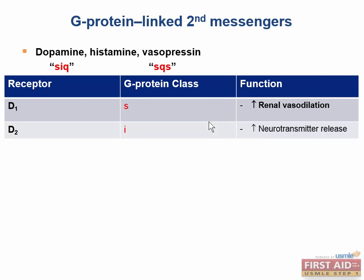The D2 receptor is of the G-sub-I class, and it modulates neurotransmitter release in the brain. In neurology, dopamine plays a major role in the pathophysiology of Parkinson's disease. When thinking about dopamine in the brain, you should think about D2 receptors.